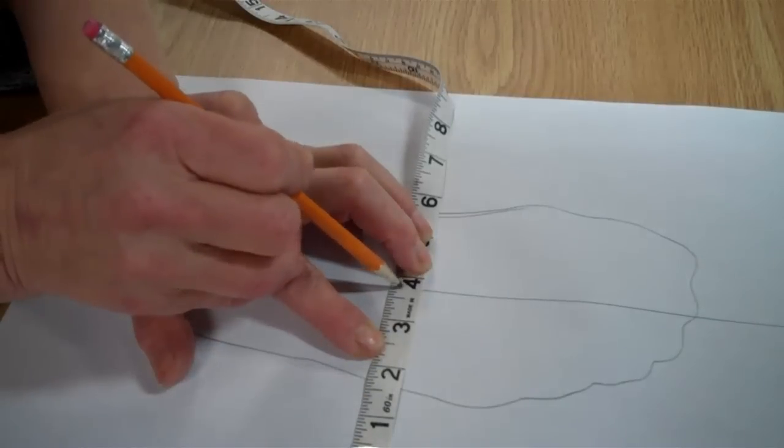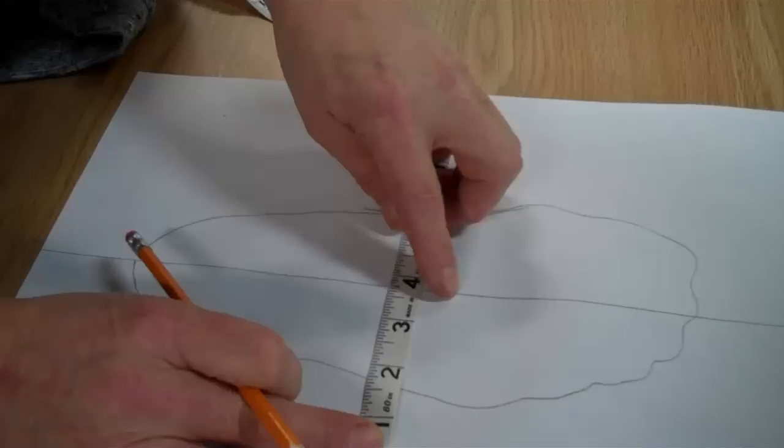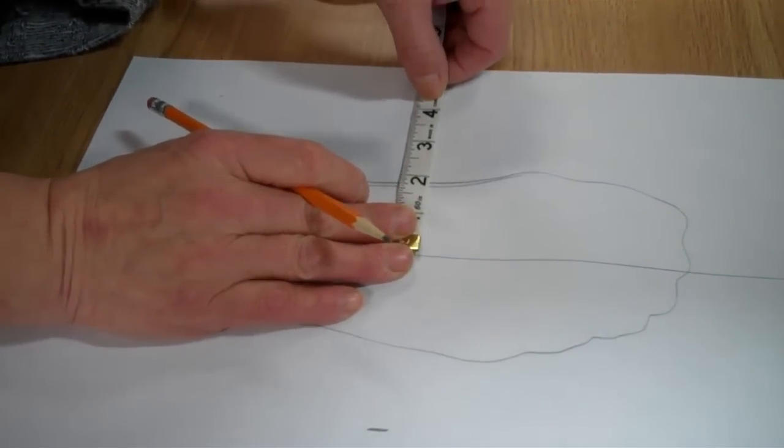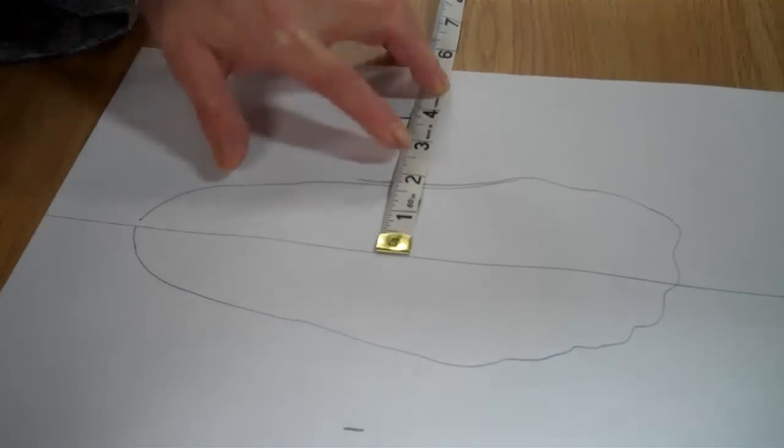So three and three quarters, draw a line on one side of the center line. Do the same on the opposite side of the line. Three and three quarters of an inch.